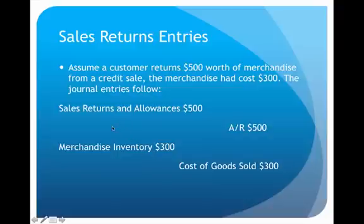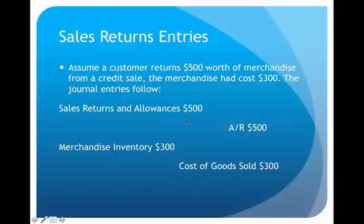When you look at these journal entries it's almost an exact reversal of the original sale. On the original sale we debited Accounts Receivable; here we do the opposite — crediting Accounts Receivable reduces the amount they owe us. And where we originally debited Cost of Goods Sold and credited Merchandise Inventory, those are now reversed. Because it is a return, we reverse everything. The only real difference is that instead of using Sales, I use a new account called Sales Returns and Allowances — used anytime a customer returns merchandise or receives a price reduction.